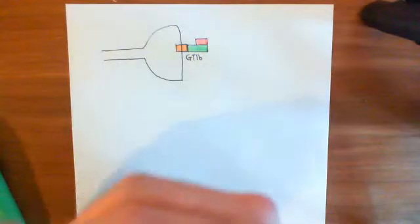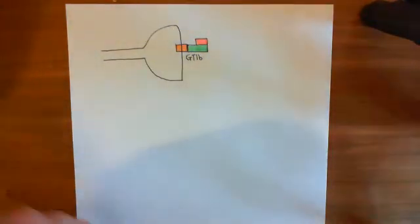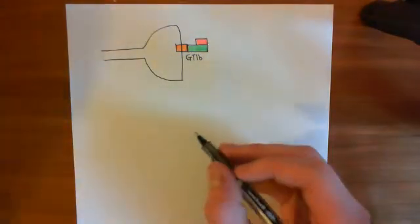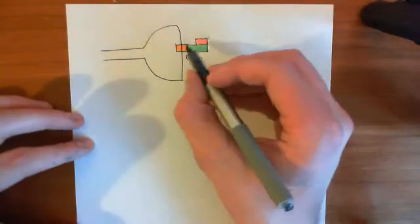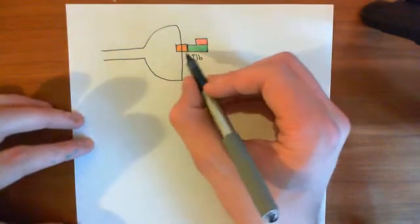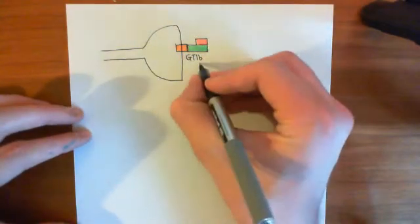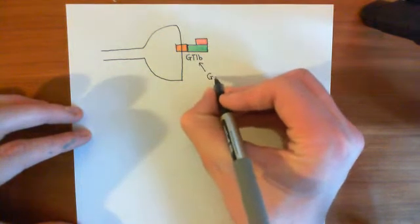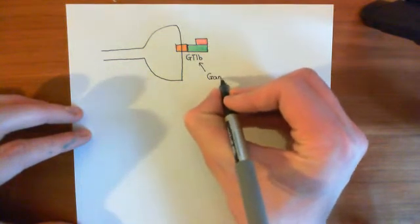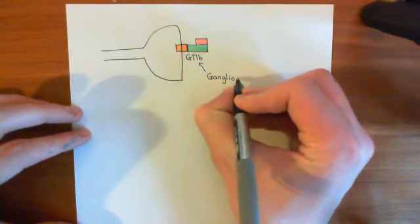Green now represents the heavy chain, and pink now represents the light chain. The botulinum toxin is binding to this GT1B, and this is what's known as a ganglioside. So let's discuss a little bit what a ganglioside actually is.